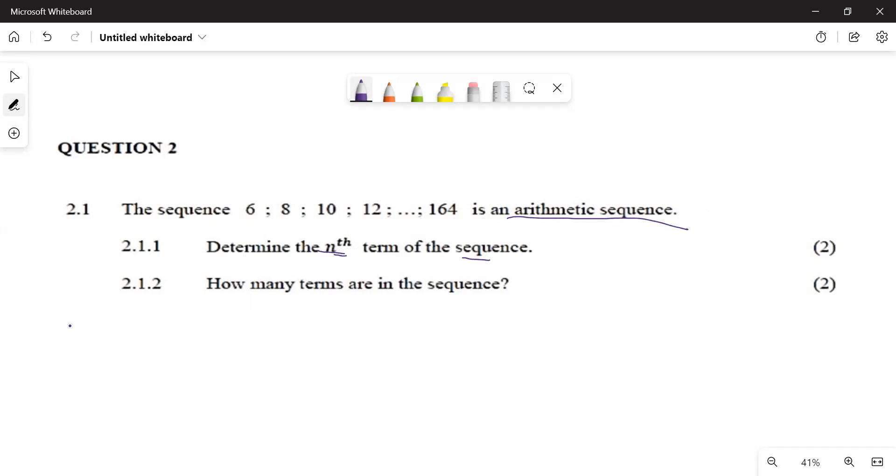They want to ask determine the general term of the sequence. So 2.1.5, how would you do it? You're going to say 8 minus 6, and if you say 8 minus 6, it gives us 2. And then you say 10 minus, it gives us 2.